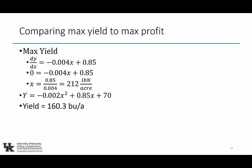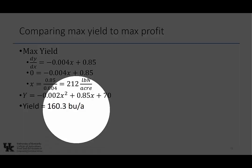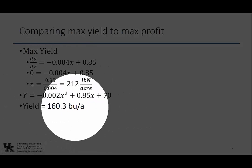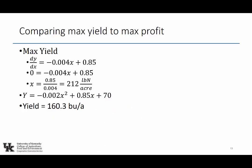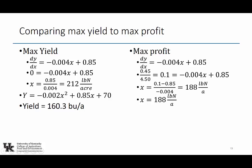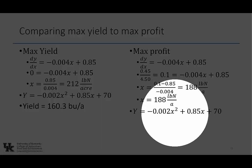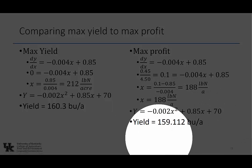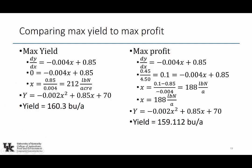Let's compare max yield to max profit. Max yield at 212 pounds per acre gives 160.3 bushels per acre. Max profit at 188 pounds per acre gives 159.1 bushels per acre. I had to apply 24 extra pounds of nitrogen to get four-tenths of a bushel of grain. I couldn't pay for that 24 extra pounds of nitrogen with that last shot — it wasn't going to get me enough grain to pay for it. Now do you understand the diminishing return function?